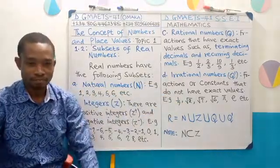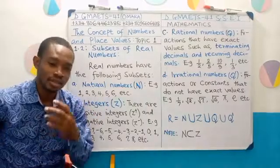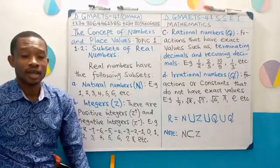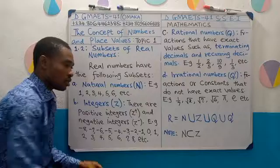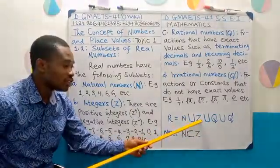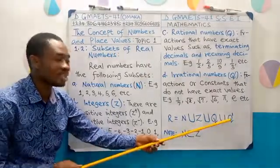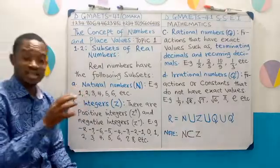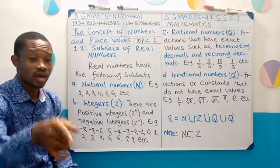Now, we've known the subset of real numbers. Please, I want you to take note of the following things on the board here. That real numbers, it's simply natural number, union, integer, union, rational number, union, irrational number. You know, the concept of union, we study it under sets. We'll meet all this when we discuss set theory.